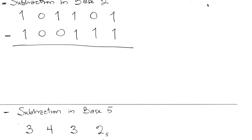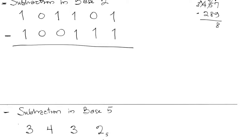The next topic is subtraction. Let's remind ourselves of how we do subtraction in base 10 using the same numbers: 457 minus 289. We do 7 minus 9 — not possible — so we borrow 1 from the next column, making it 4. When we bring that 1 to the units place, we're actually bringing 10, making it 17. 17 minus 9 is 8. Then 4 minus 8 isn't possible, so we borrow again, bringing 10 over to get 14. 14 minus 8 is 6, and 3 minus 2 is 1. The answer is 168.